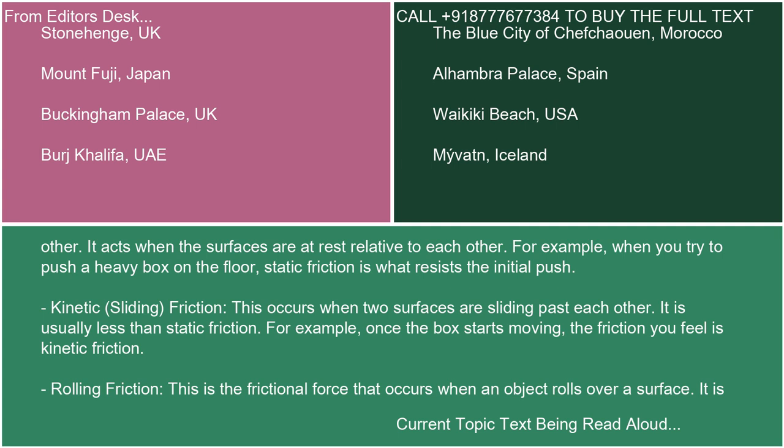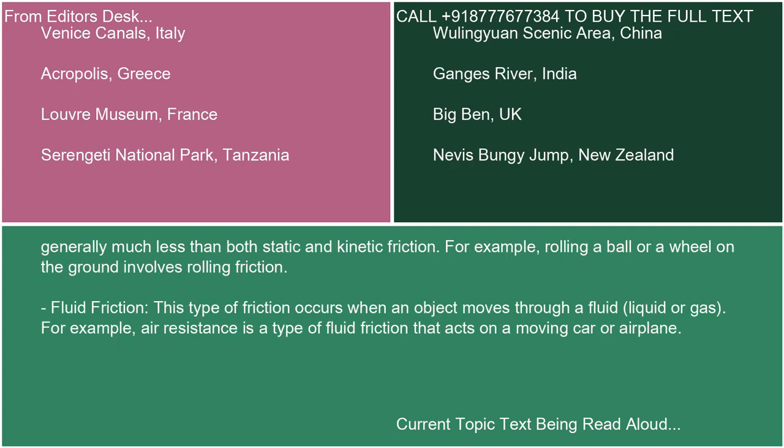Rolling Friction is the frictional force that occurs when an object rolls over a surface. It is generally much less than both static and kinetic friction. For example, rolling a ball or a wheel on the ground involves rolling friction. Fluid Friction occurs when an object moves through a fluid — liquid or gas. For example, air resistance is a type of fluid friction that acts on a moving car or airplane.